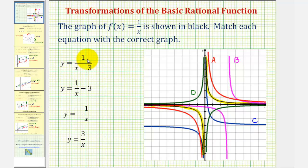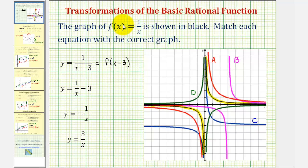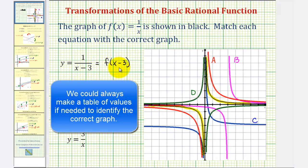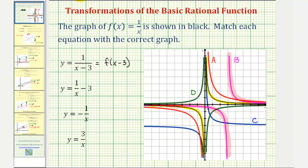The first equation given is y equals one divided by the quantity x minus three, which is equivalent to changing the input of f to x minus three, or f of the quantity x minus three. It takes an x value of three to get an input of zero into this function, so this shifts the graph three units to the right. Therefore, this equation produces graph B, which is the graph of f of x shifted three units to the right.